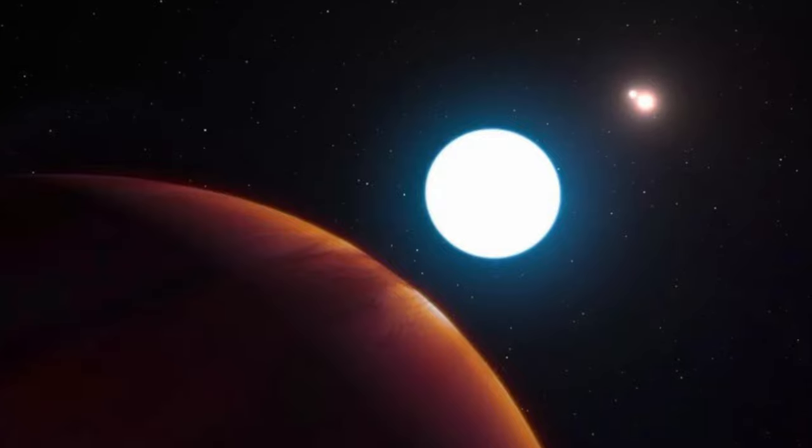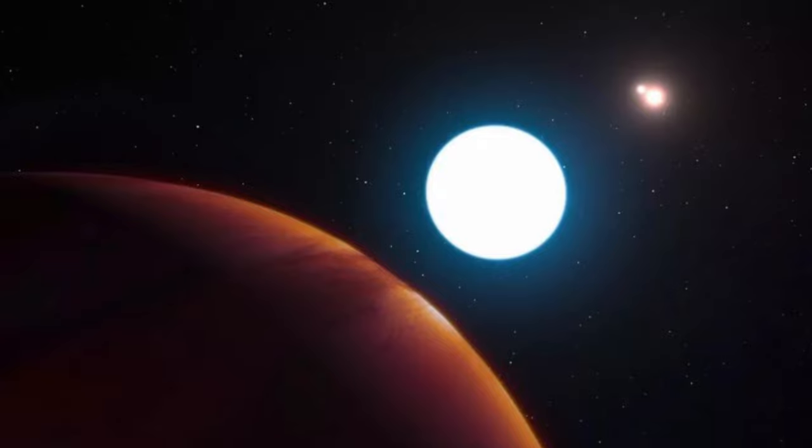In other words, what scientists had thought was a planet was actually something moving very quickly in the background, many light-years farther away from Earth than the HD 131399 system.